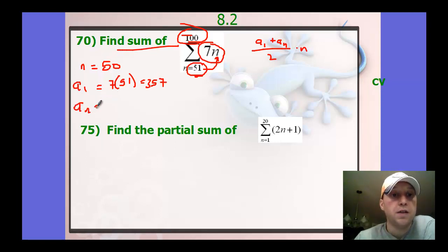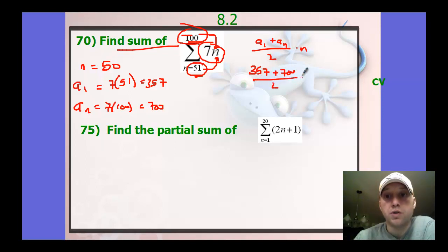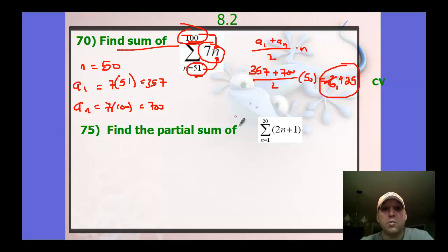And then finding the nth term is plugging in the n value, the upper bound, 100 n. So 7 times 100, and you get 700. So plug those in this formula. So 357 plus 700 all over 2 times 50. So you put this in, you get 26,425. Hope you see how this formula helps us add a bunch of values in a given pattern together.